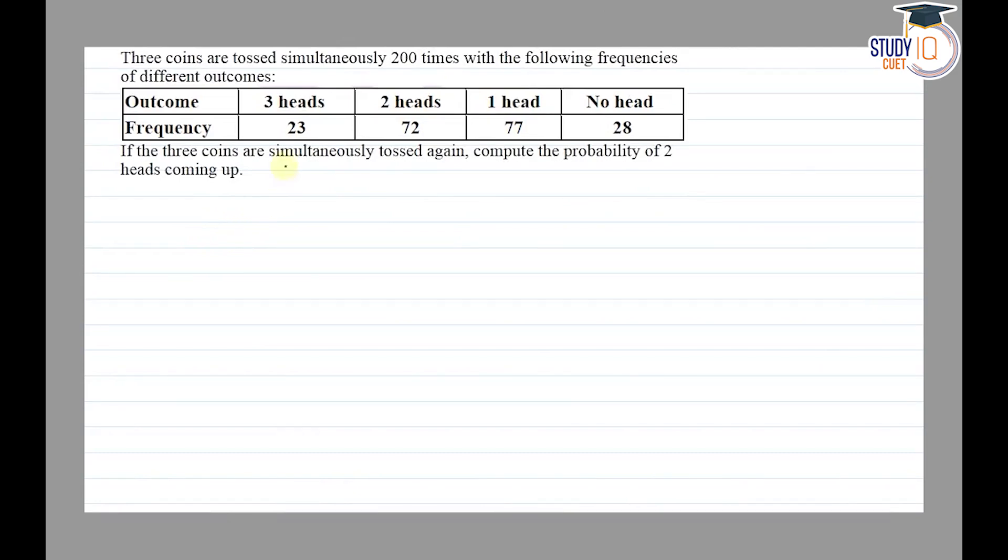The question says that 3 coins are tossed simultaneously 200 times with the following frequencies of different outcomes. So we have this table given here with outcome and frequency. If the 3 coins are simultaneously tossed again, compute the probability of 2 heads coming up.